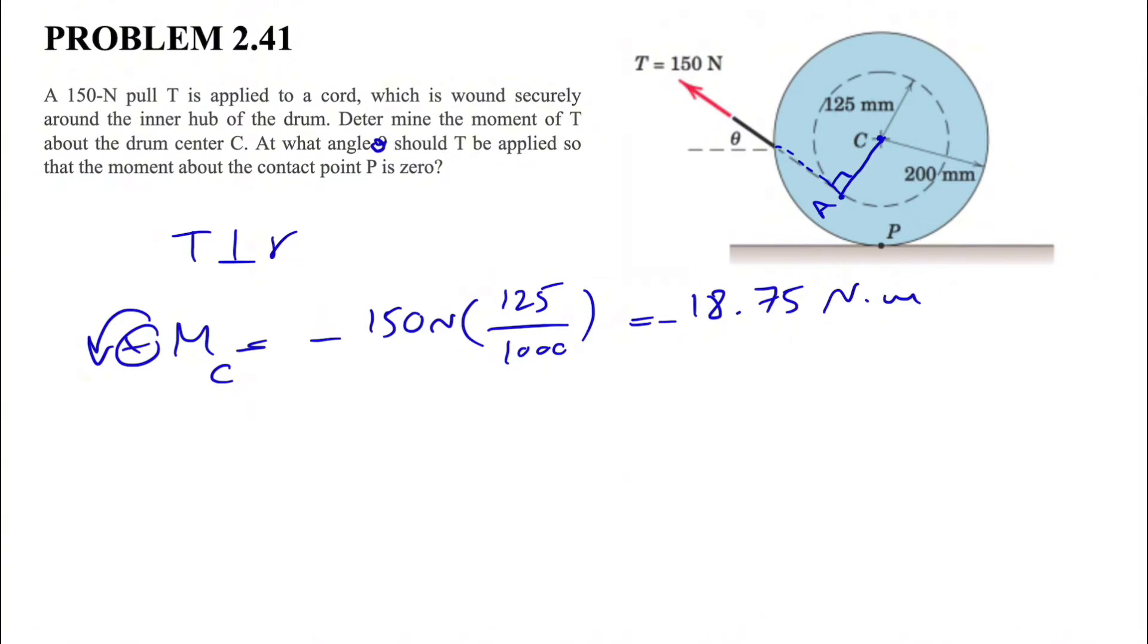If that's the case we can find the answer which will be 18.75 newton-meters. As I mentioned we have a negative sign showing the moment is clockwise. That was the first part of the question. Let's move on to the second part.